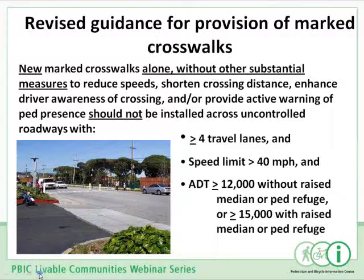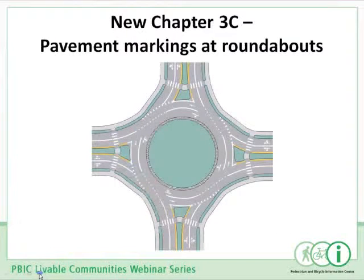As we all know, there are many existing marked crosswalks under these conditions that don't have other substantial measures with them — it's good advice to reevaluate those existing locations. But the MUTCD as written does not yet require that. There is a whole new chapter added to Part 3 dealing with pavement markings at roundabouts, which affects pedestrians and bicyclists due to roundabout operation. The text and figures address locations of crosswalks adjacent to the roundabout and what to do with bike lanes approaching a roundabout, providing new guidance, standards, and options concerning pavement markings at roundabouts.